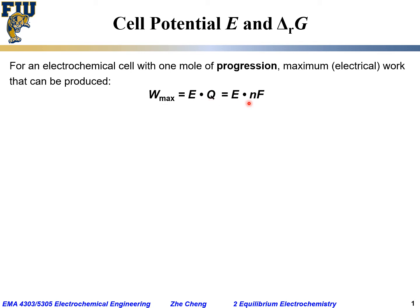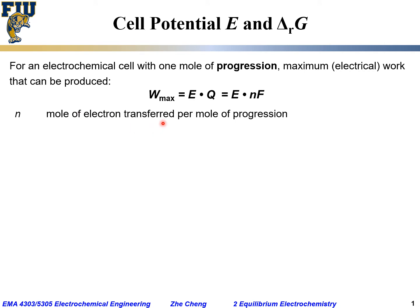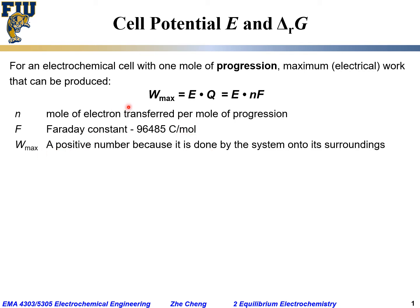Considering Faraday, the total charge transferred q equals n times F, where n is the number of moles of electrons transferred per mole of progression for this particular reaction, and F is the Faraday constant, 96,485 coulombs per mole.